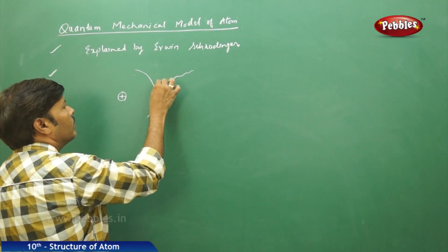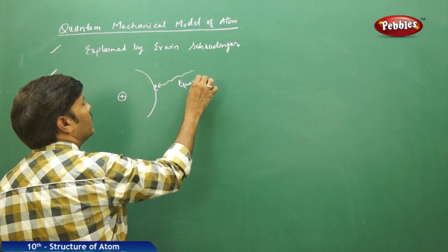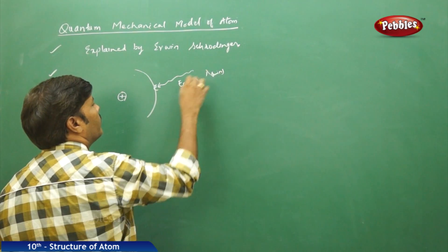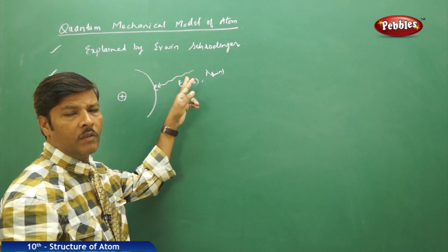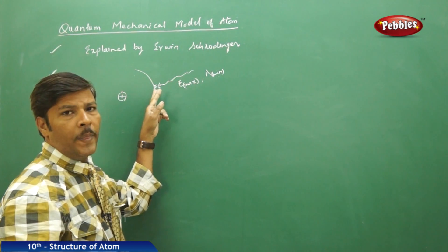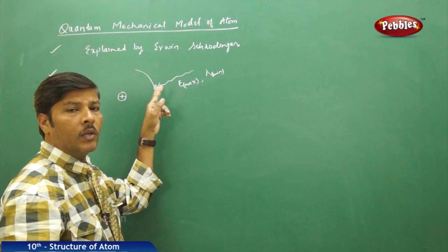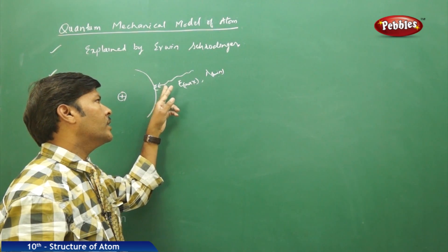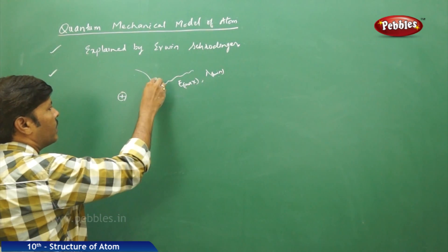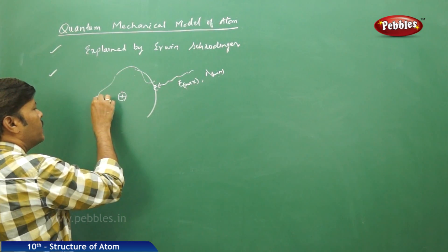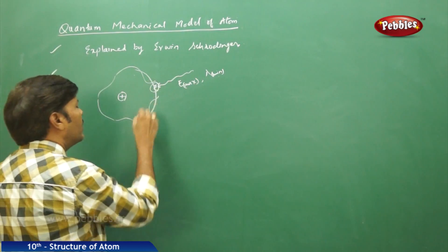Schrödinger is of the opinion that if you pass a radiation of maximum energy and minimum wavelength — a suitable visible radiation from the electromagnetic spectrum — onto this microscopic fundamental particle, the moving electron, then this electron, when it tries to absorb the radiation of maximum energy and minimum wavelength, disturbs its path. Its path changes in a wave-like nature, and there is a change in the properties of the electron.